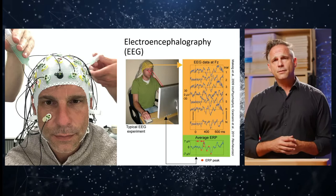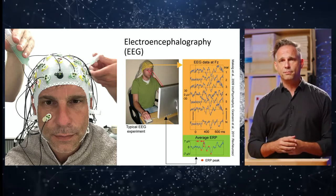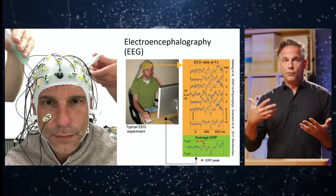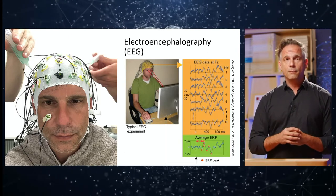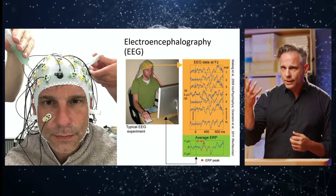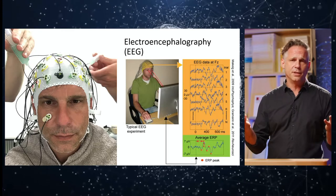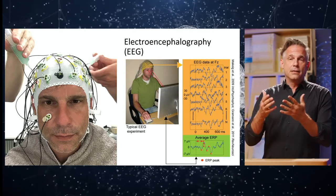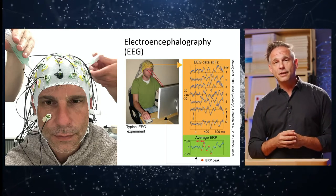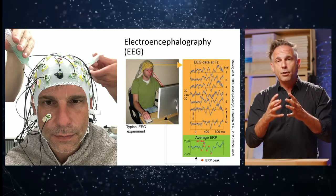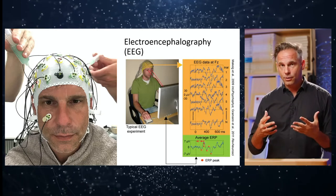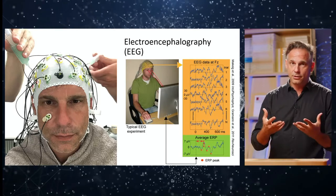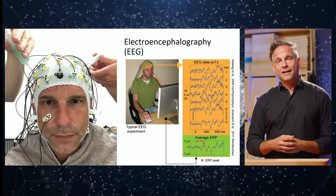Traditional desktop EEG experiments require participants to sit in dimly lit rooms, focus on a screen, and react according to pre-instructed rules. We sometimes even ask them not to blink. We take this very high-dimensional signal — millions of bits per second — reduce it to averages, extract the peak of a certain component, and compare it to one bit of information: usually a button press at the end of the trial.